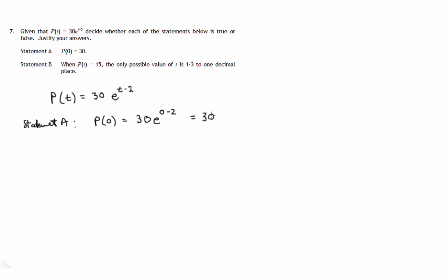So we've got 30 lots of e to the power 0 minus 2, which is e to the minus 2. And what does e to the minus 2 mean? Well, it means 1 over e squared. So we've got 30 times 1 over e squared — in other words, the fraction 30 over e squared.